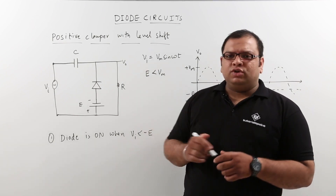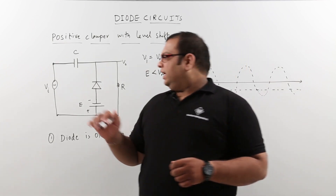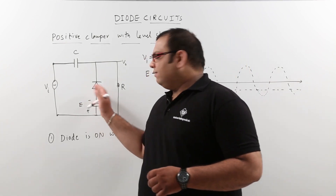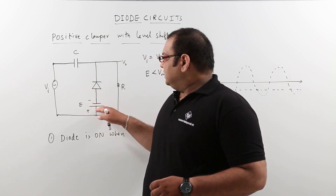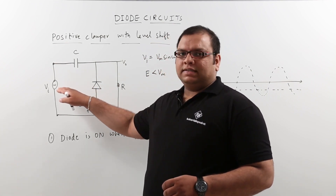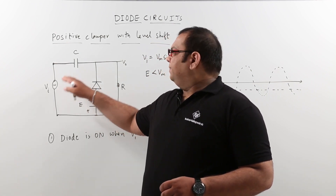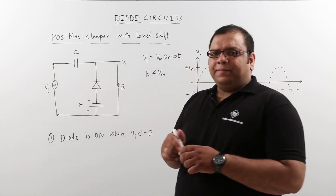Now let us discuss the positive clamper with a level shifter. In this circuit we have a voltage source, a DC supply, an input signal, a capacitor, and a diode connected.